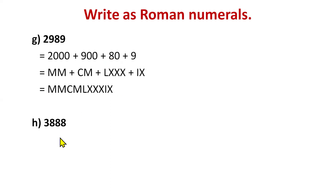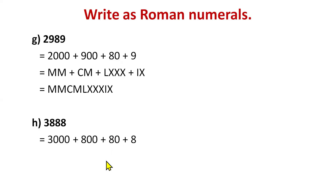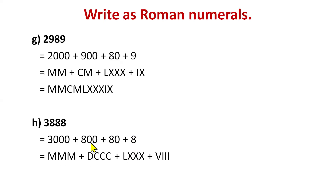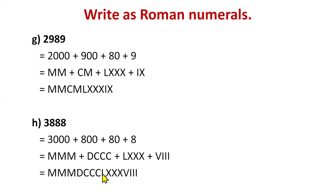You just need to decompose and you can write any Roman numeral. Let's try 3888. Decompose: 3000 + 800 + 80 + 8. 3000 is MMM, 800 takes help from 500 (D): DCCC, 80 is LXXX, and 8 is VIII. So 3888 is MMMDCCCLXXXVIII.